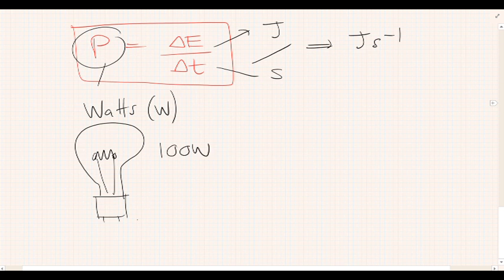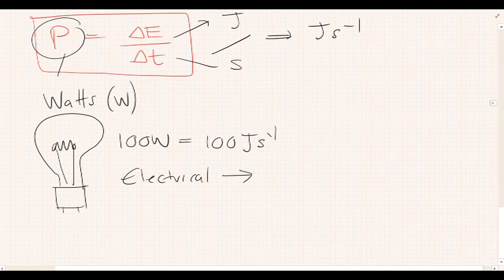Now, if we have a 100 watt light bulb, that actually means that there is 100 joules per second, because power is the rate at which energy is transferred or transformed. 100 joules per second of electrical potential energy being transformed into, in this case for a light bulb, you're going to have heat and light per second.